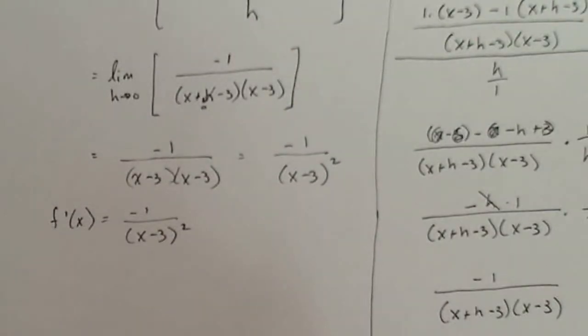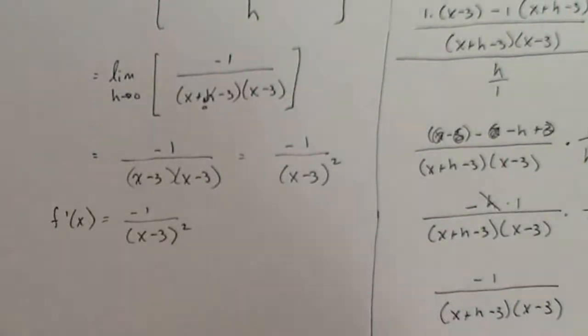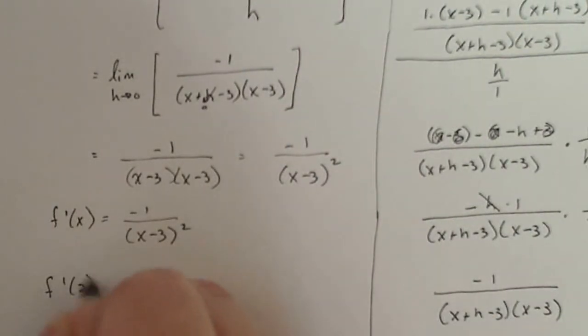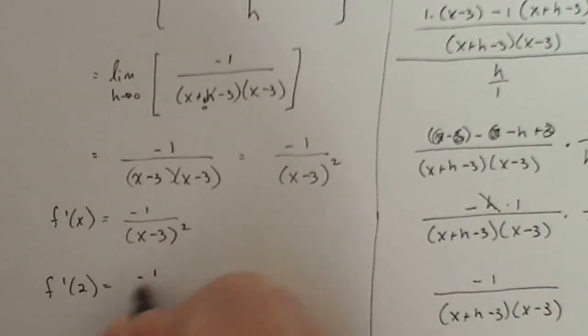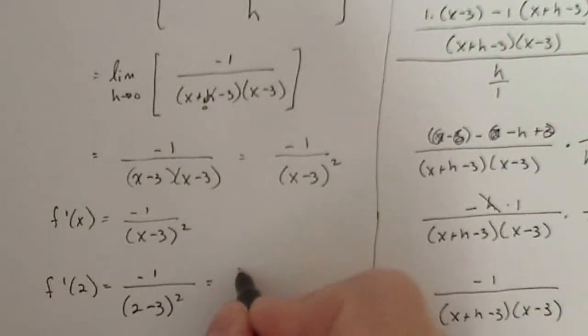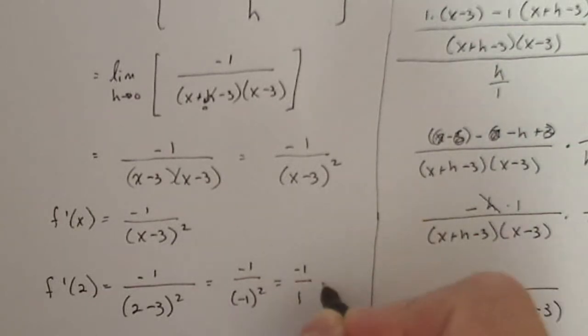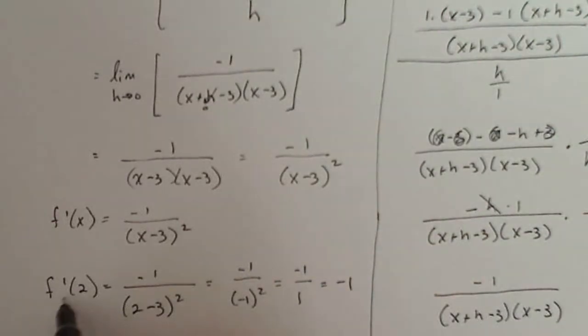Now I can actually just plug in the different values of x to get the derivatives at those points. So if I say f prime of two, that's going to be minus one divided by two minus three squared. What is that? That's minus one over minus one squared. This guy in the denominator just becomes positive one, negative one on the top. So my derivative at x equals two is negative one. So what does that mean? That means if I drew the graph of f initially and drew the tangent line, the slope of that tangent line at two would be minus one.